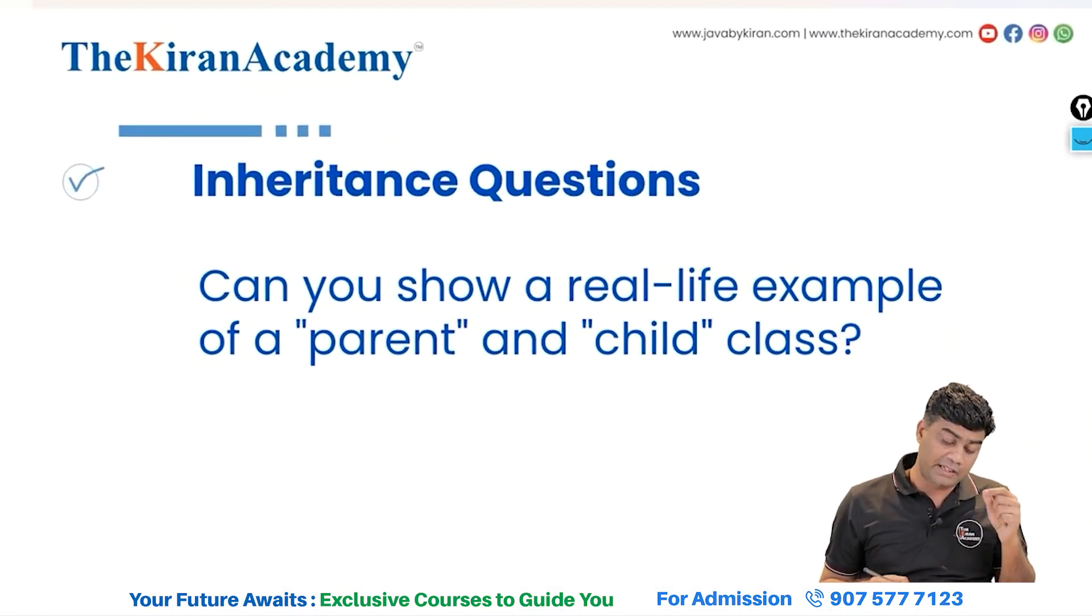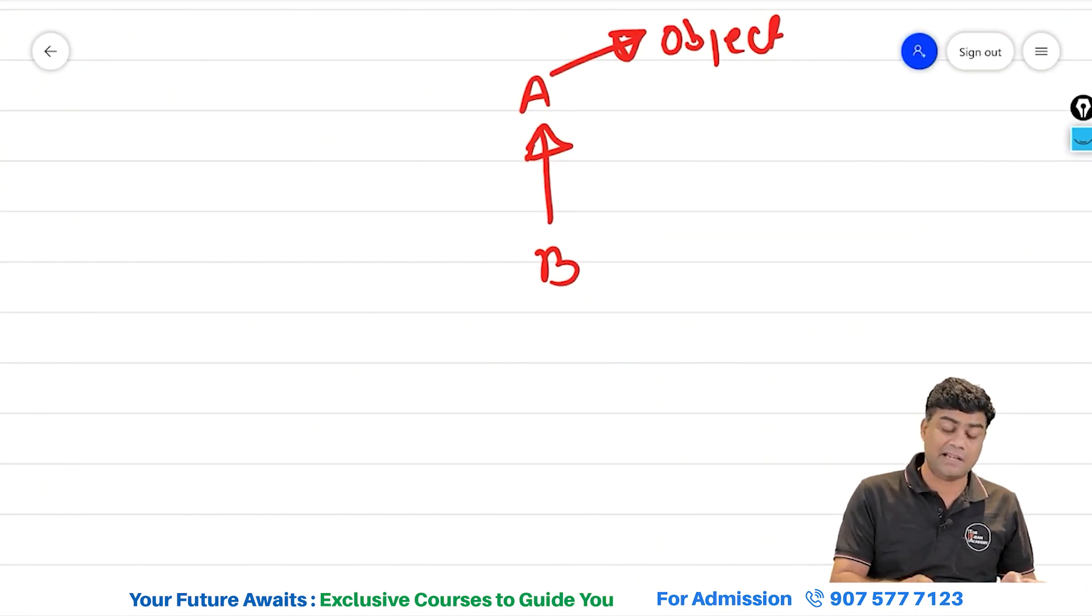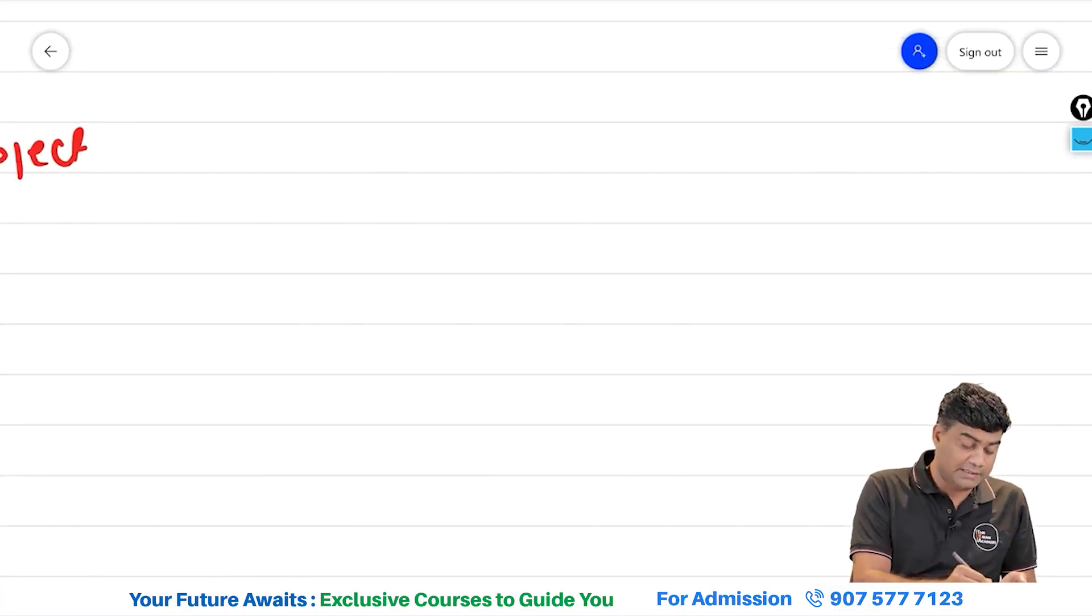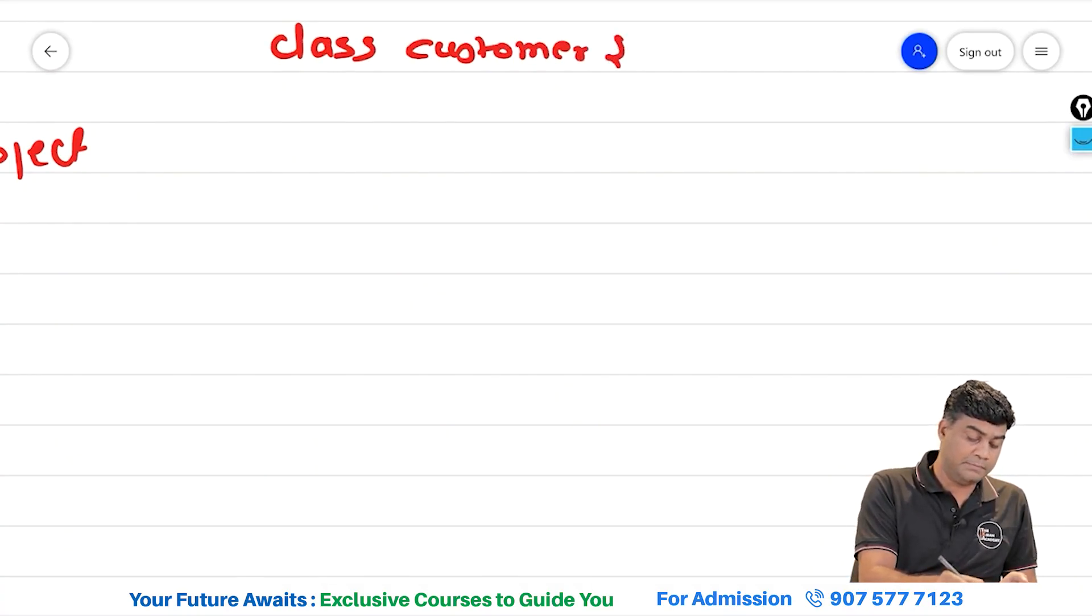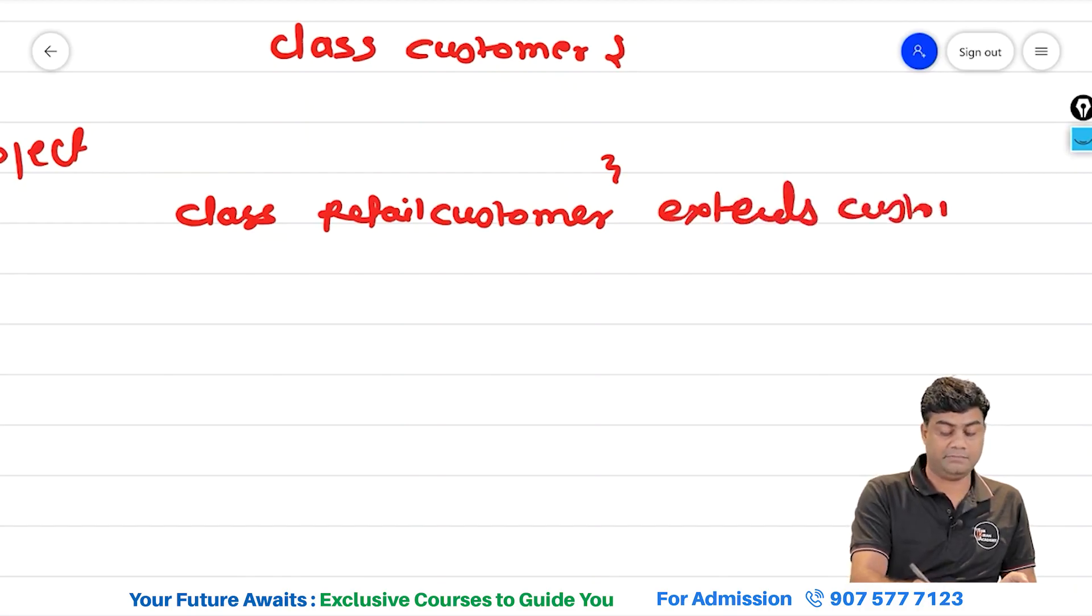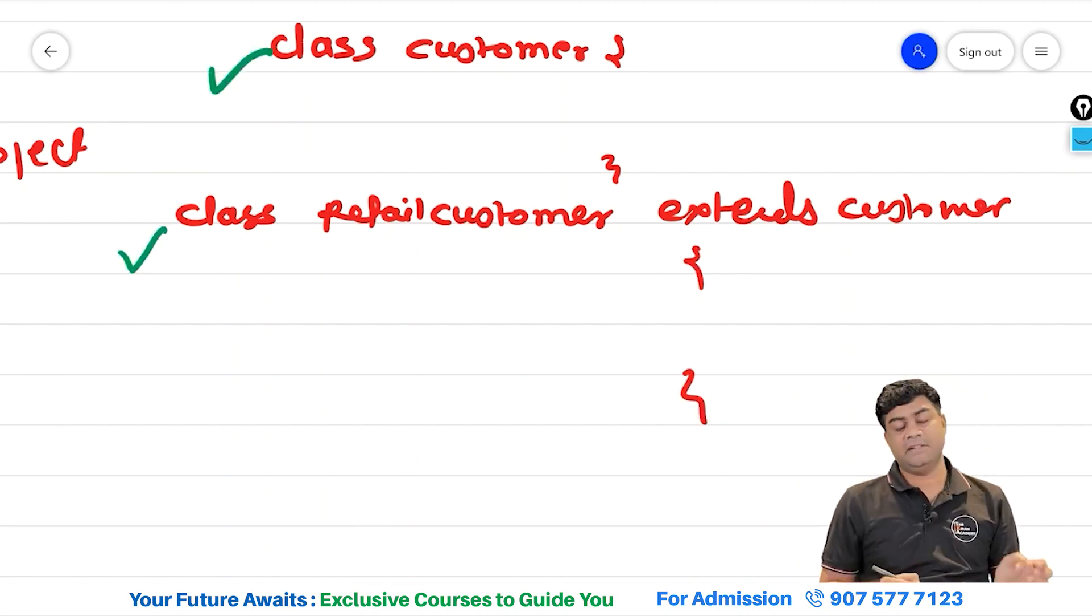Can you show real life examples of a parent and child class? To answer this question, when it has been asked real life examples, in the project which you have used, you can have like this: you can have class customer, then you can have class retail customer extends customer. This is parent class and this is child class.